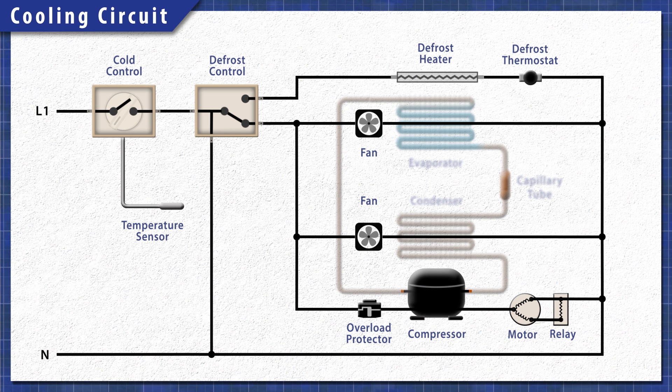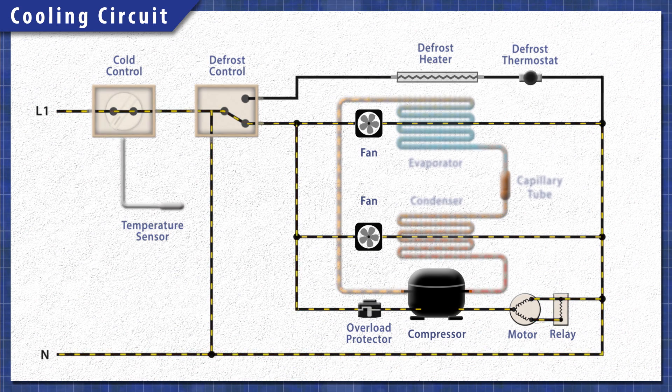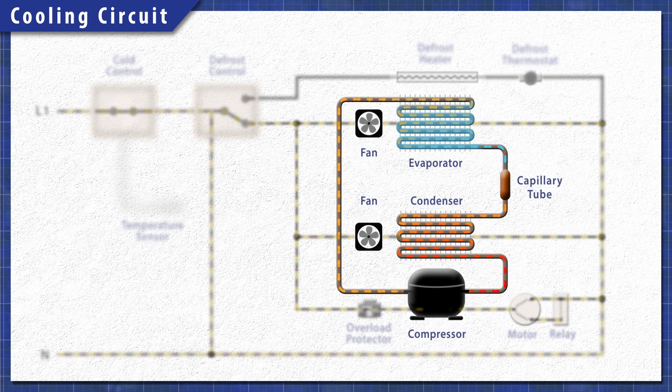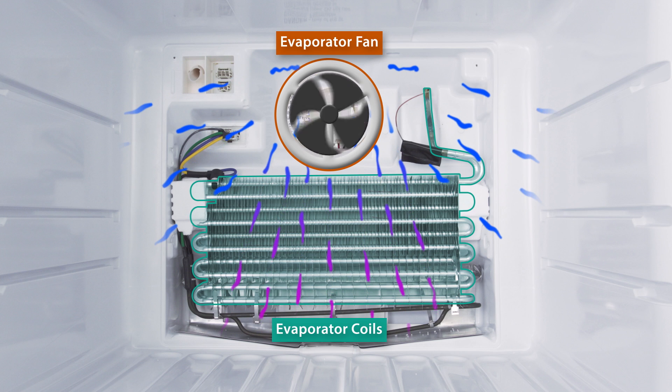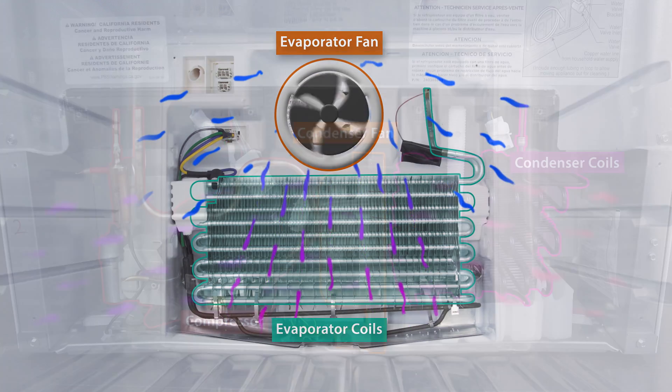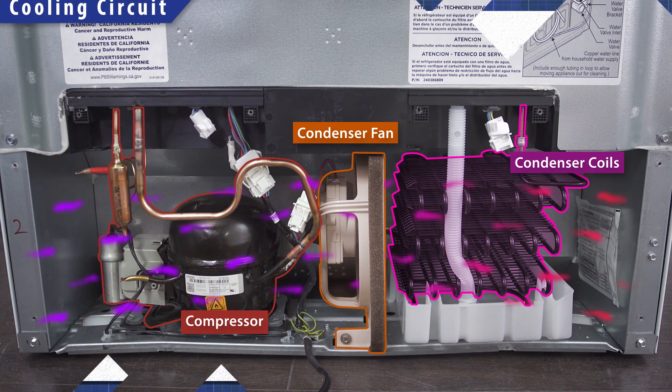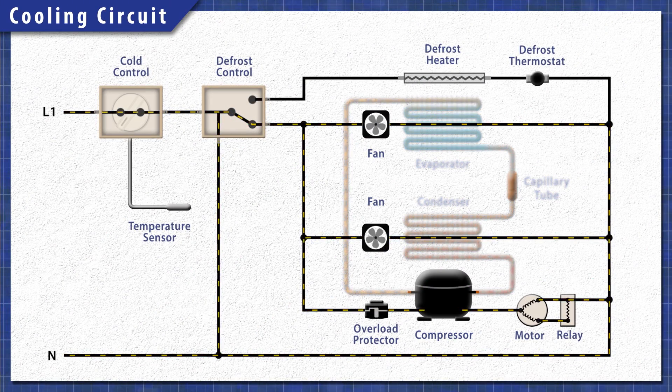All refrigerators work in the same basic way. When cooling is needed, the cold control sends power to the cooling circuit. The compressor pushes the refrigerant through the system. In the freezer heat is extracted by the evaporator coils and is released through the condenser coils behind the refrigerator. This process continues until the set temperature is reached.